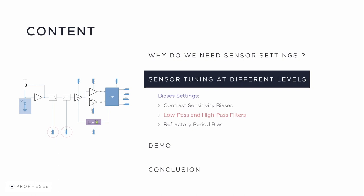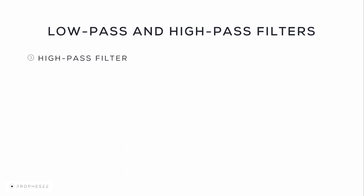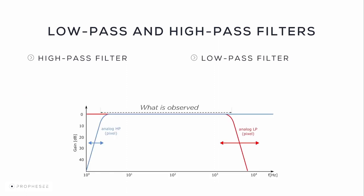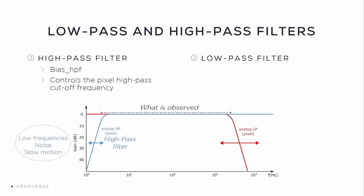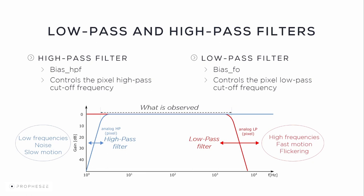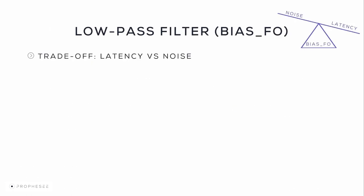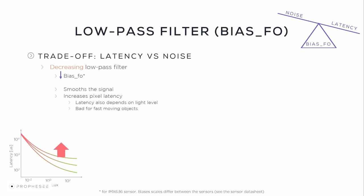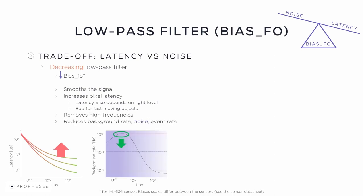Now we'll move on to the analog settings for low-pass and high-pass filters. These filters allow you to control the range of frequencies detected by the event-based sensor, managed via biases. Bias HPF controls the pixel high-pass cutoff frequency — adjusting it allows you to filter out low frequencies including slow motion and noise, or extend the range of detected high frequencies limited by default settings. When adjusting the low-pass filter, consider the trade-off between pixel latency and noise. Decreasing the low-pass filter means decreasing the bias FO value. For the IMX636, this smooths the signal, increases pixel latency, particularly impacts fast-moving objects, removes high frequencies, and reduces background rate, noise, and generated event rate.